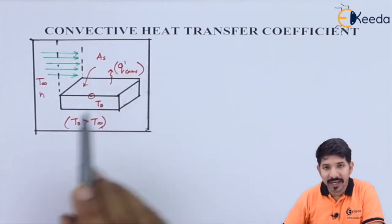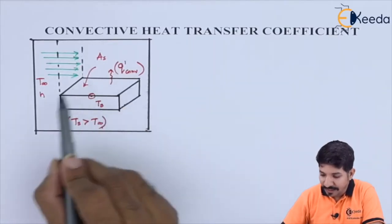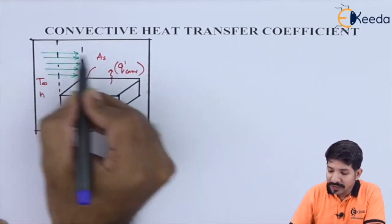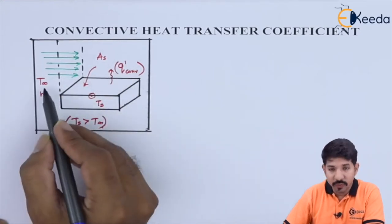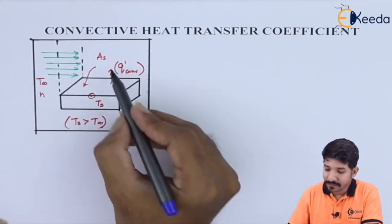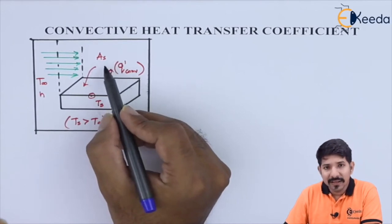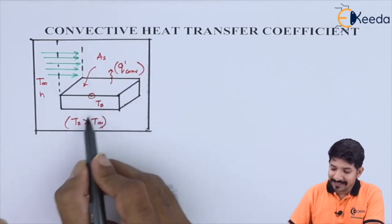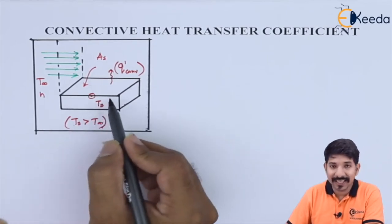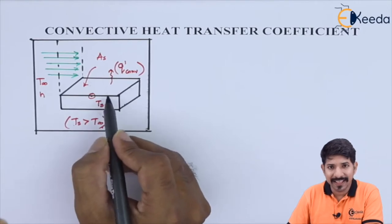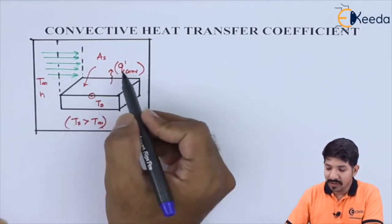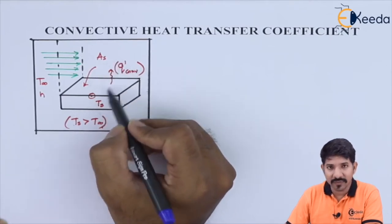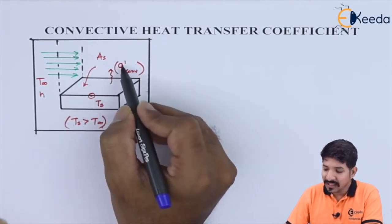To understand the heat transfer coefficient, let us take the example of a plate. There is a hot plate whose surface temperature is Ts, and some fluid is flowing over the plate whose temperature is T∞. The surface area of the plate is As. Since Ts is higher than T∞, heat will flow from the plate to the fluid — let us call this Q' convection.